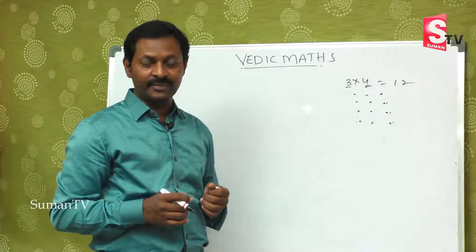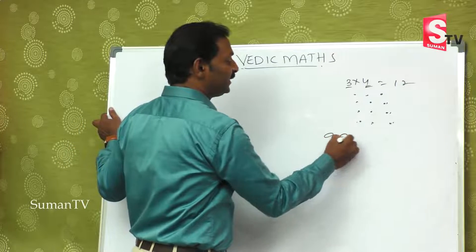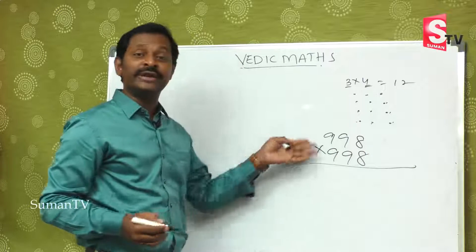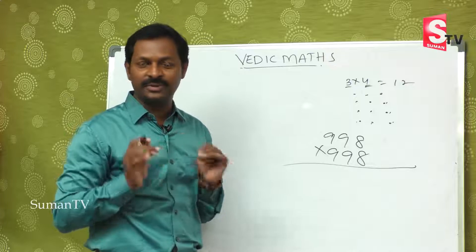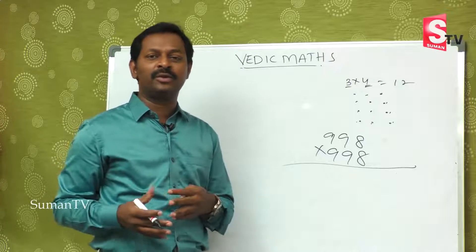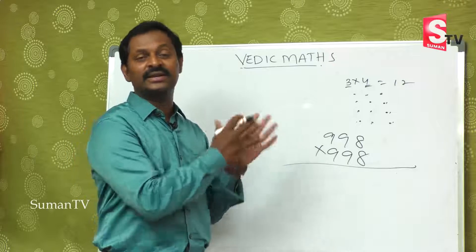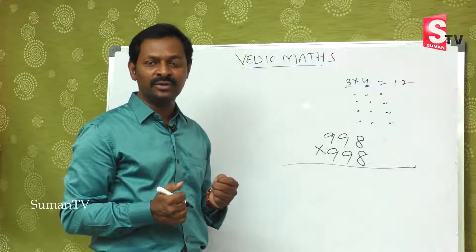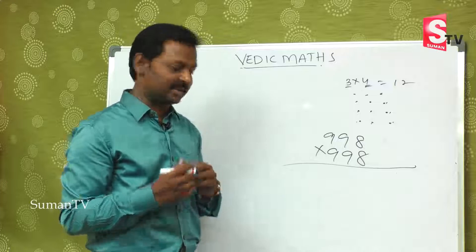But for bigger numbers — suppose 998 is multiplied by 998 — so, any dots? Is it possible? No, this is not at all possible. So we have to use a different method. Today we will discuss about these things in our classroom.